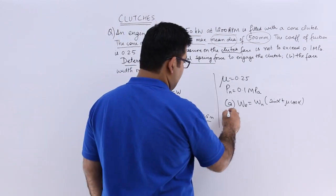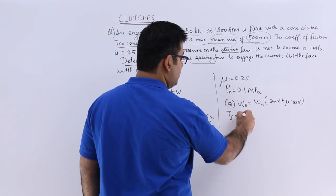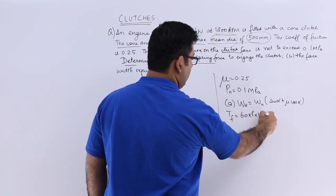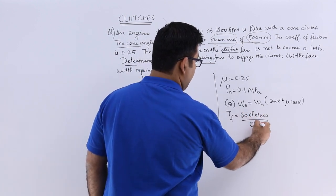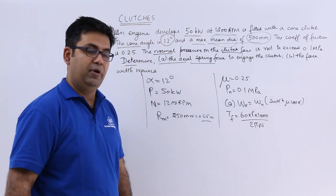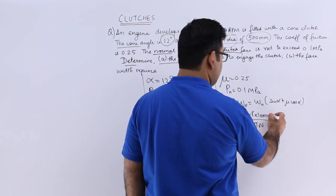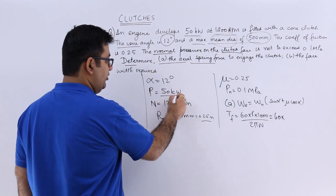So how do we calculate WN? For that we need TF, that's the frictional torque. It will be 60 times P times 1000 upon 2 pi N. So you will have 60 into P is how much? 50.